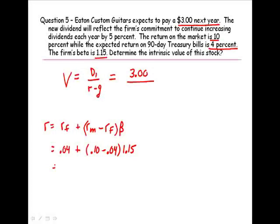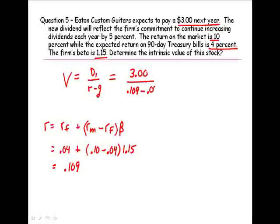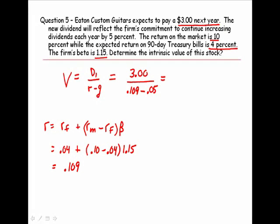So the required rate of return using the capital asset pricing model, we get 0.109, which is 10.9%. So in our denominator, the required rate of return minus the growth rate of dividends of 5%, which was given, we're going to arrive at a value of $50.85.